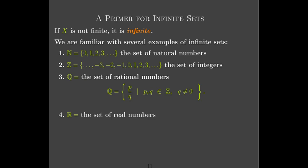Now, with all of these sets, they actually form a nested sequence of subsets. Every natural number is an integer, every integer is a rational number, and every rational number is a real number. But there are real numbers which are not rational, rational numbers which are not integers, and integers which are not natural numbers. And so that begs the question: how would you define the cardinality of these sets? Would this nested subsetting mean that the cardinality of the natural numbers would be less than the cardinality of the integers?